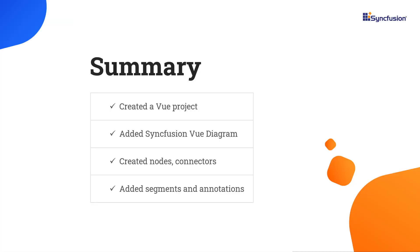In this video, you saw how to create a diagram component in a Vue project. I showed you how to create and add nodes, and define connectors and segments with annotations. If you would like to see a working example, you can download one from the GitHub link shared in the description below. I have also included a link in the description where you can check if you qualify for our community license, giving you a free license key for our entire Vue suite. If you found this video useful, don't forget to click the like button and subscribe to our channel. Thanks for watching.